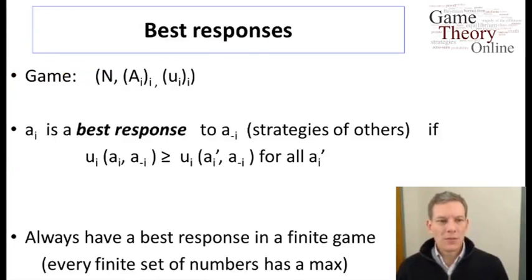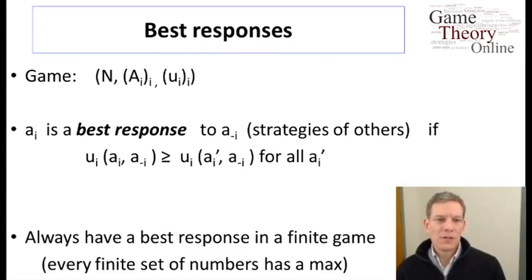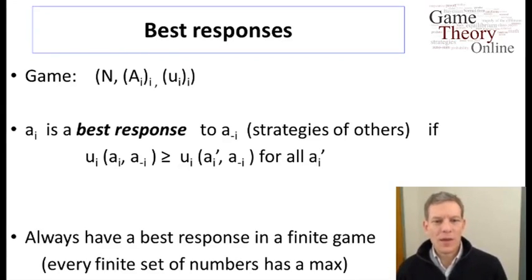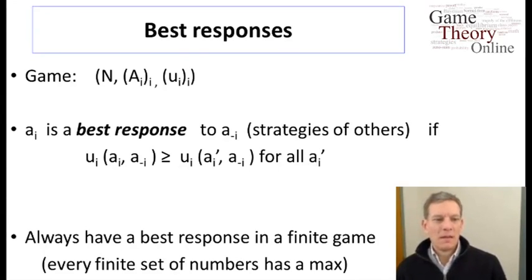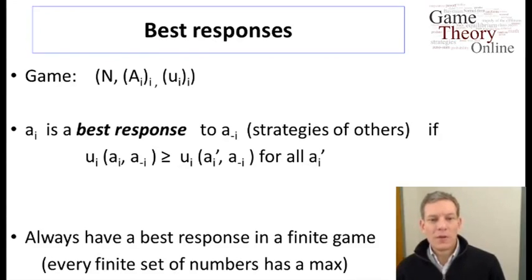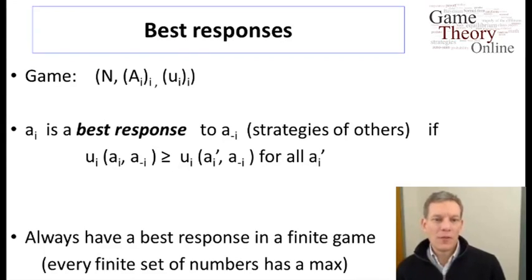In terms of our normal form notation, we start with a game: a set of players, their actions A sub i's for each i, and their utility or payoff functions U sub i's. We can then define a best response for a given player to the actions of another player. We say that A_i is a best response to A minus i — where A minus i means a list of the strategies of every player except for i — if the payoff to i, U_i of A_i against A minus i, is greater than or equal to what they would get from any alternative A prime i. Best response is defined for a particular player relative to a set of actions held fixed for the other players.